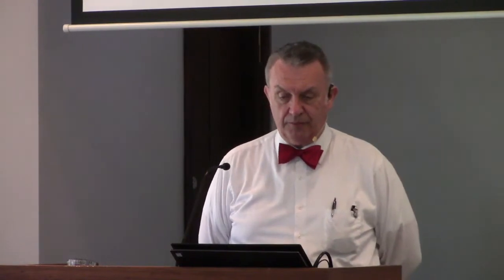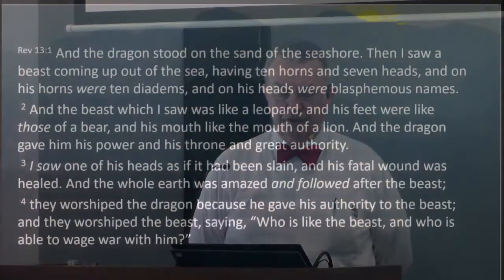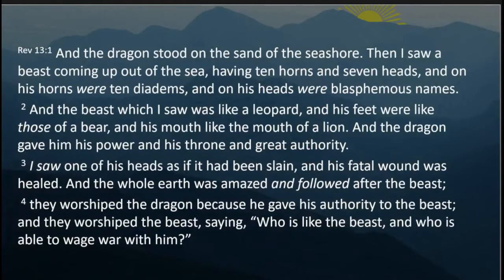Let's read the first four verses. The dragon stood on the sand of the seashore. Then I saw a beast coming up out of the sea, having ten horns and seven heads. On his horns were ten diadems, and on his heads were blasphemous names. The beast which I saw was like a leopard, his feet were like those of a bear, and his mouth like the mouth of a lion. The dragon gave him his power and his throne and great authority. I saw one of his heads as if it had been slain, and his fatal wound was healed. The whole earth was amazed and followed after the beast. They worshipped the dragon because he gave his authority to the beast, and they worshipped the beast, saying, 'Who is like the beast, and who is able to wage war with him?'